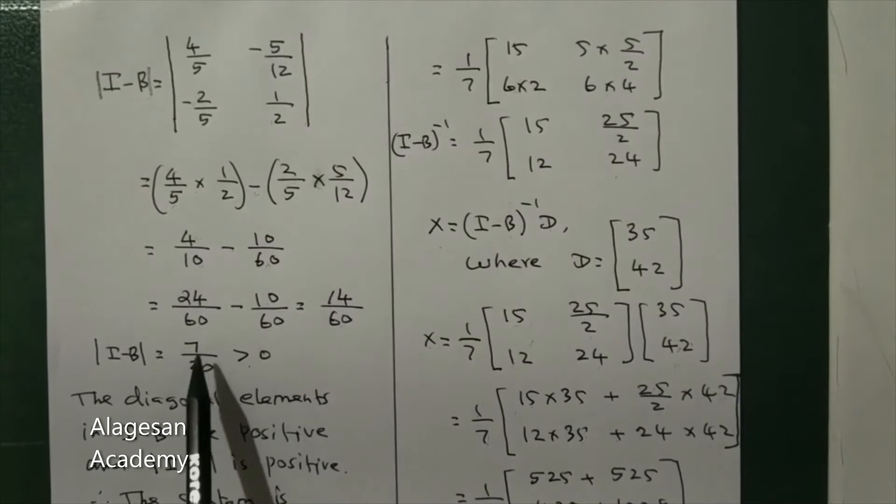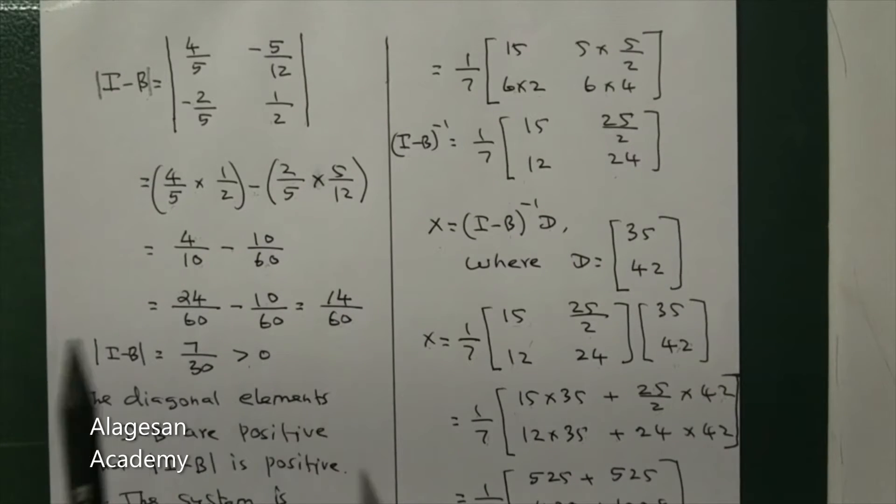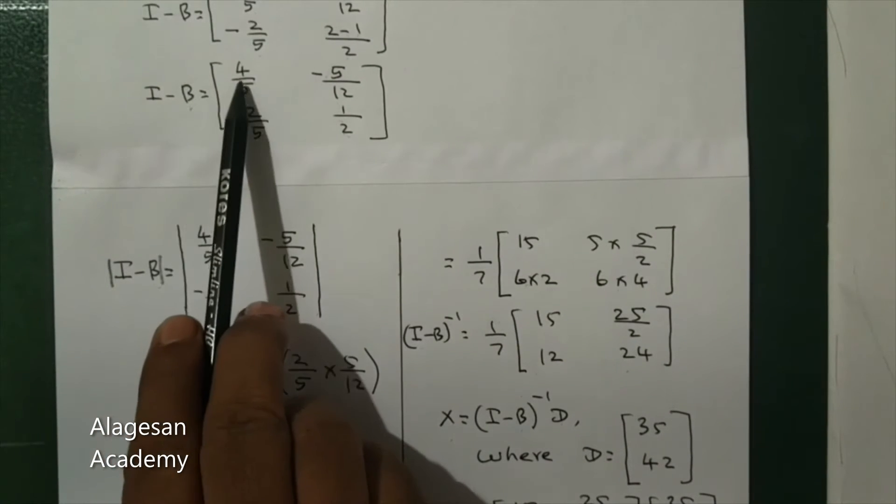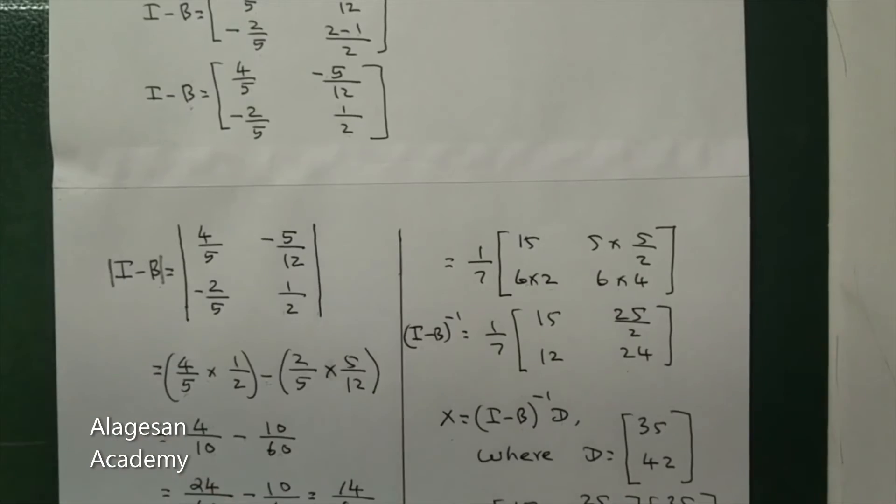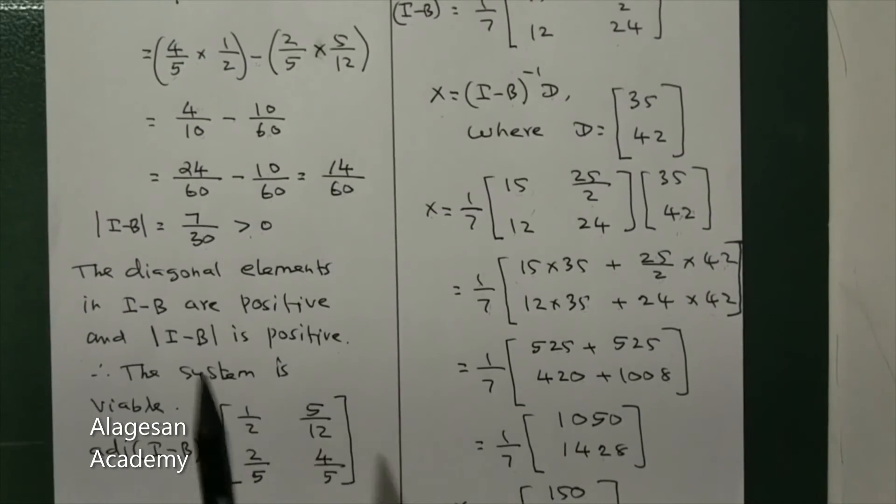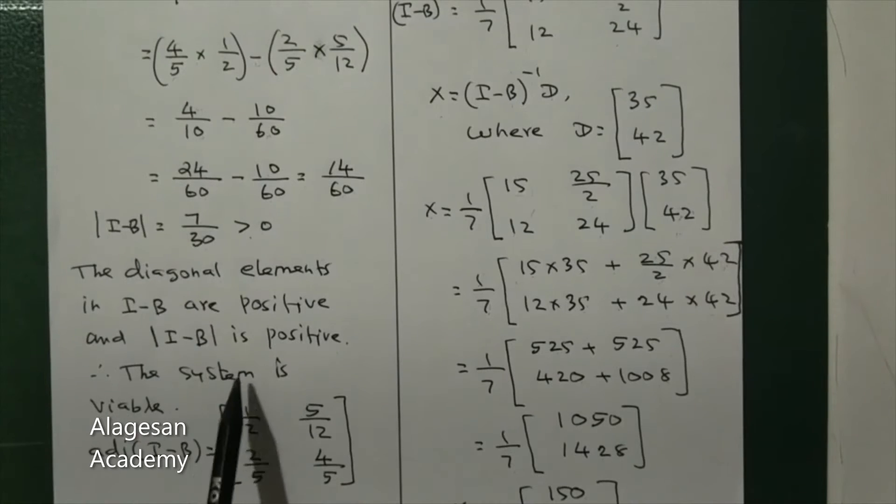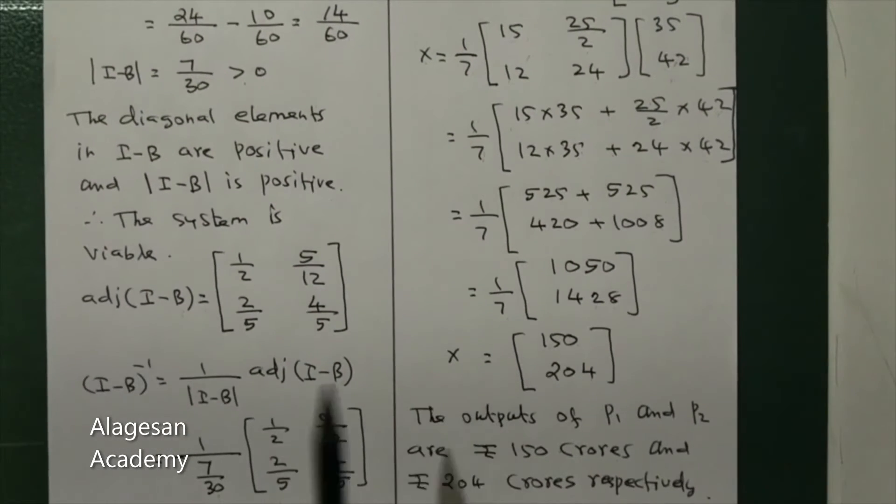This simplifies to 24/60 minus 10/60, which equals 14/60. Dividing gives 7/30, which is greater than 0. So in matrix I minus B, the diagonal elements are positive and determinant of I minus B is also positive, so the system is viable.